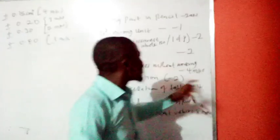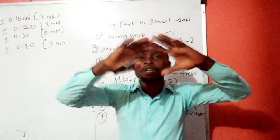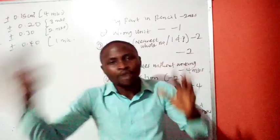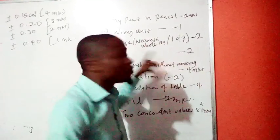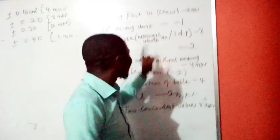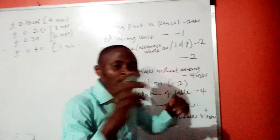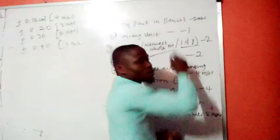Then we have burette. When you are doing your table of titer values, and you have your burette readings, if you mistakenly round up the burette readings to what?